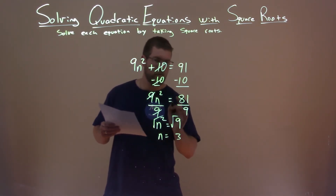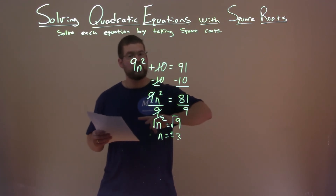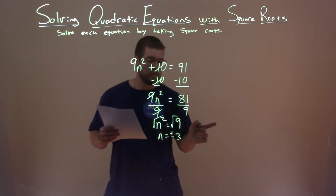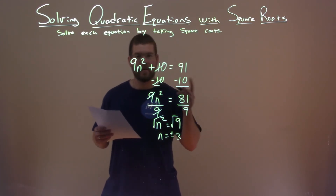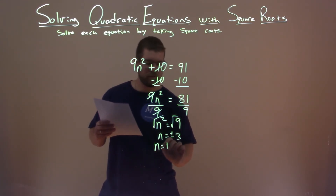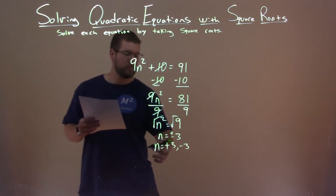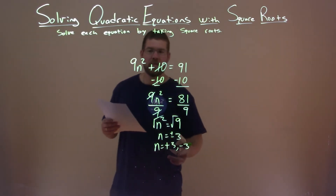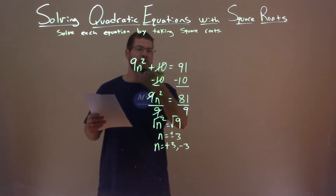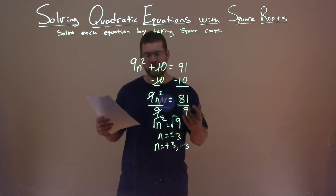Well, it's a positive and negative 3. Remember, taking the square root makes it a positive and negative, so n equals positive 3 and negative 3. There are two values that when plugged into our original equation make it true.